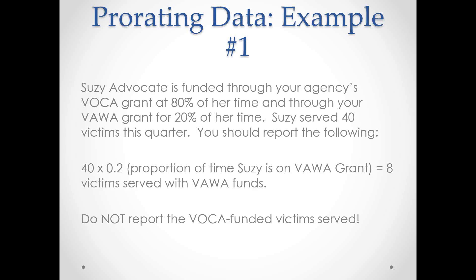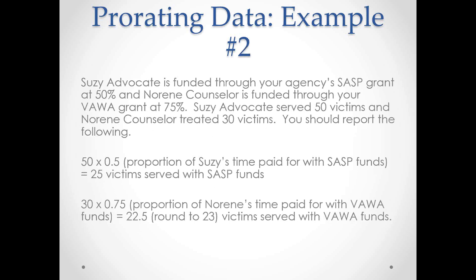Prorating data is one of the most common problems encountered on any type of report. In example one, Susie Advocate is funded through your agency's VOCA grant at 80% of her time and through a VAWA grant for 20% of her time. Susie served 40 victims during the quarter. You should therefore report 40 times 0.2 — the proportion of time Susie is on the VAWA grant — which equals 8 victims served with VAWA funds. Do not report the VOCA-funded victims served.